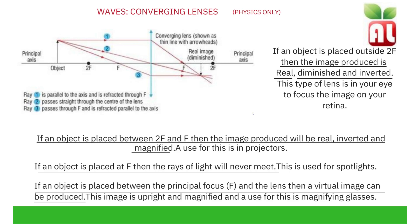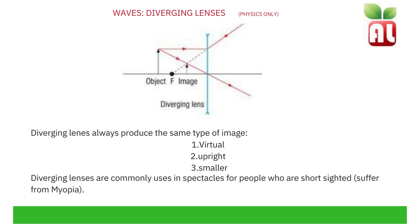For converging lenses: if an object is placed between 2F and F, then the image produced will be real, inverted and magnified — a use for this is in projectors. If an object is placed at F, the focal point, then the rays of light will never meet — this is used for spotlights. Diverging lenses always produce the same type of image: virtual, upright and smaller. Diverging lenses are commonly used in spectacles for people who are short-sighted, a condition known as myopia.